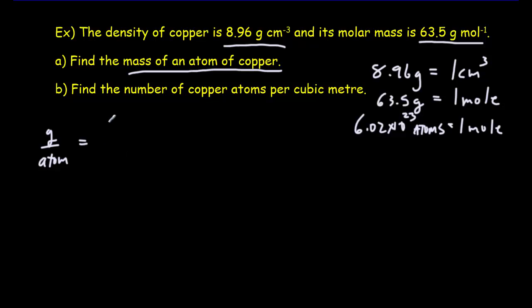So, first thing I know is that, let's say I write down 63.5 grams per mole. Which would be great, because I'd have grams in the top already, but I've got moles in the bottom. I don't want moles in the bottom.